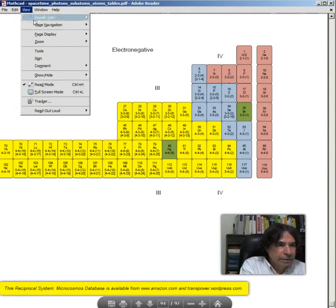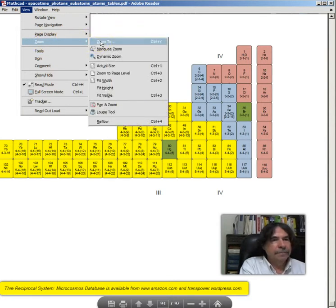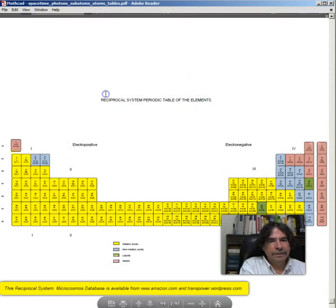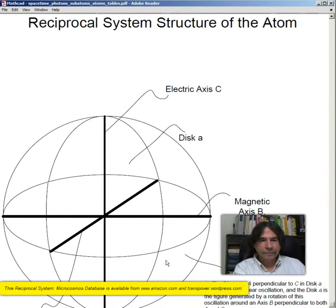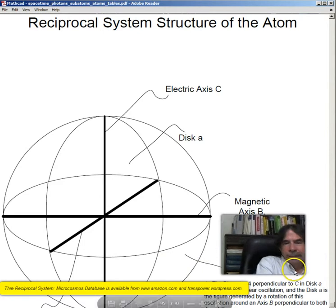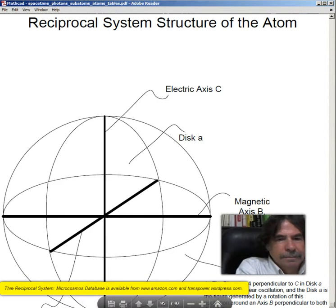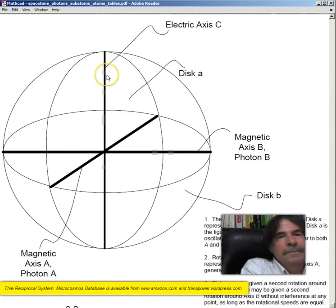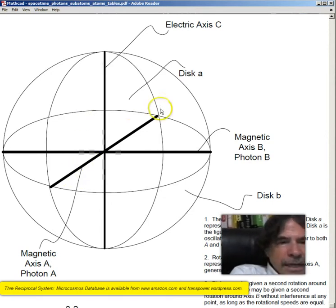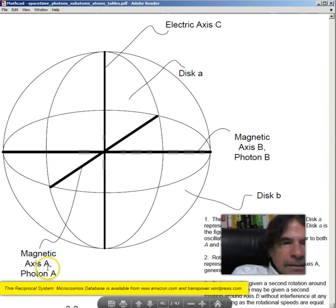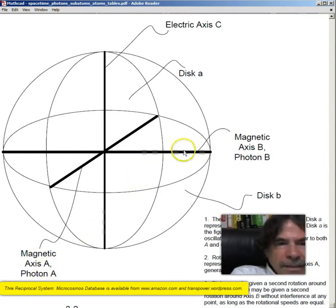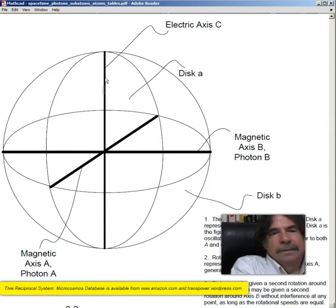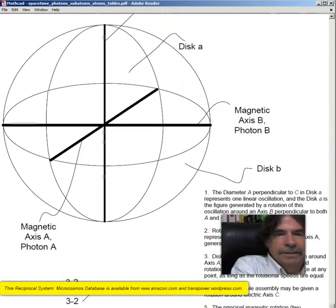So that's the reciprocal system periodic table of the elements. Very symmetrical, very nice. Now let's go back to zoom. Let's go 15. Now let's just review the reciprocal system structure of the atom.